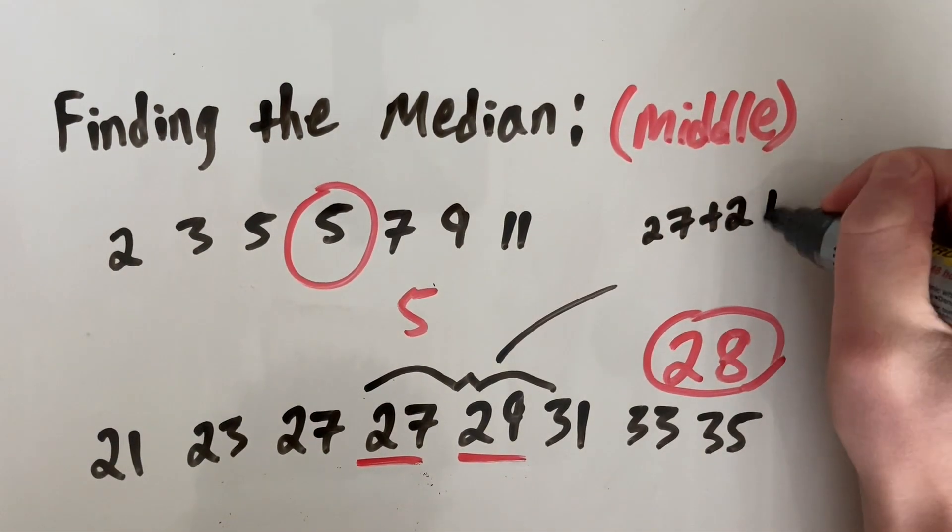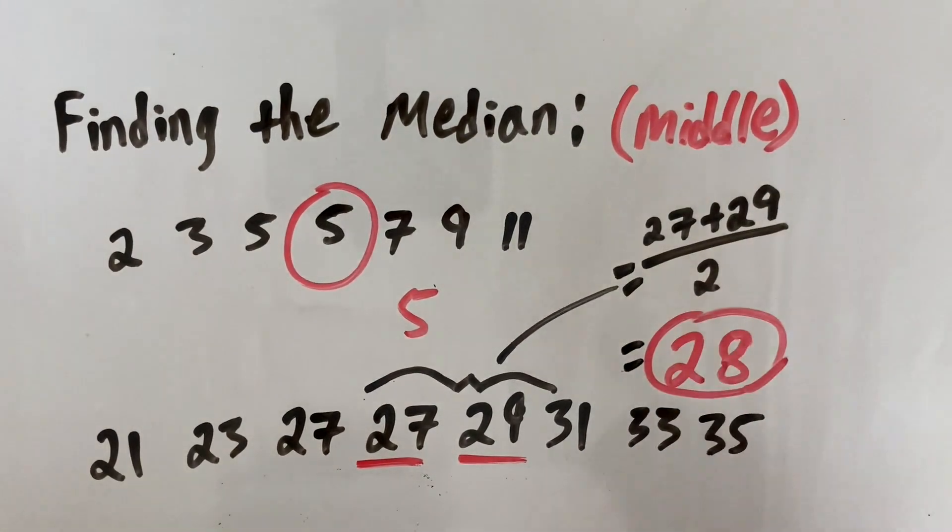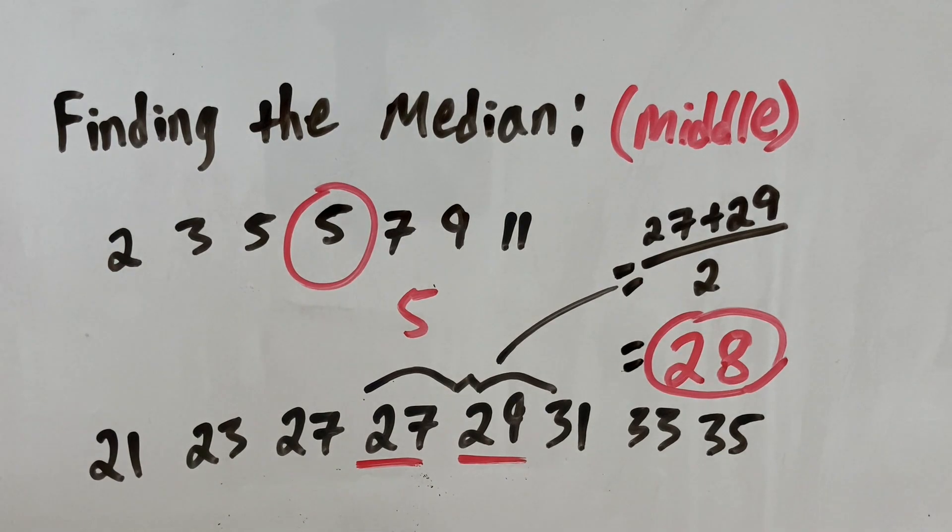Then you're going to do one number, the first, plus the second, divided by 2. And that will give you what's right in between those two numbers, which in our case is 28.